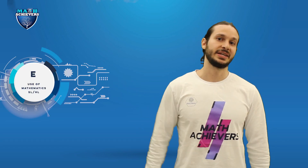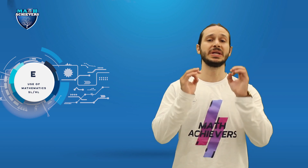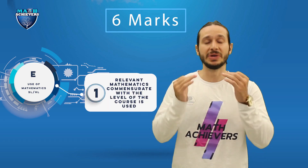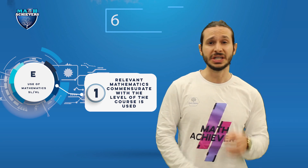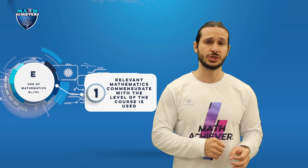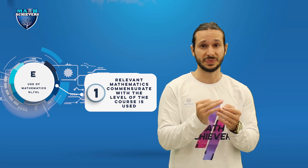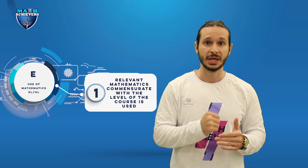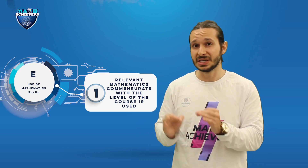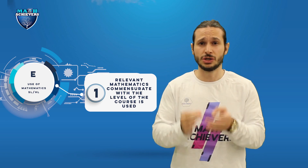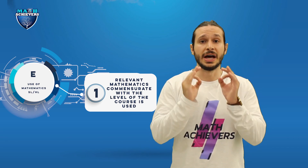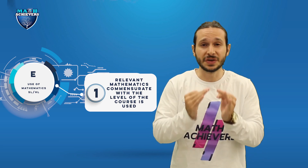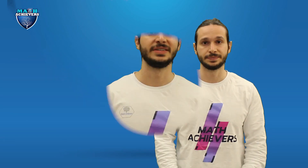The last criterion is E: use of mathematics. The highest possible grade for this criterion is six marks. In order to achieve them, the mathematics used must commensurate with the level of the course. This criterion is different for standard level versus higher level students. If you are a standard level student, the level of math you're using must be as difficult or complicated as the level of your course. A higher level student must use mathematics with difficulty up to the level of their course. I advise you to use mathematics which is difficult up to the difficulty of your course.